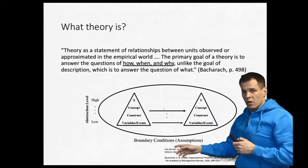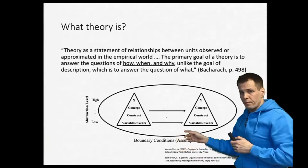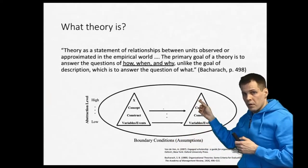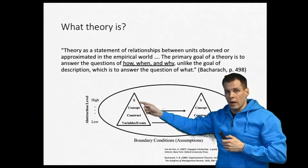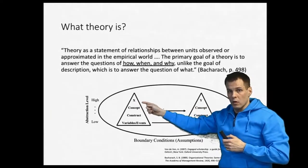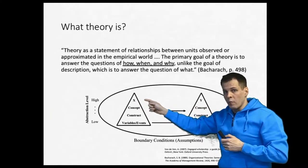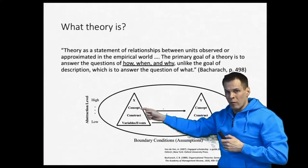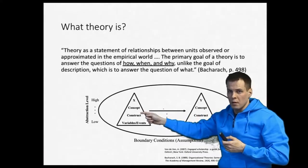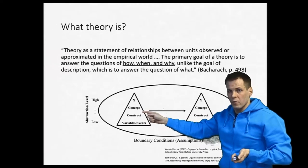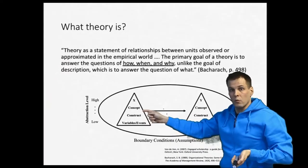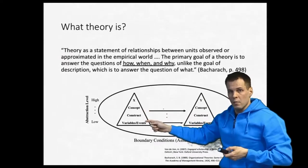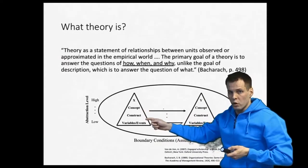In Bacharach's presentation, theory is presented as levels. We have first the theoretical concept, and when we go from high-level abstraction to lower-level abstraction we have the construct, which is a more refined version of a concept. According to his definition — and there are multiple definitions — we then have variables or events that we actually observe.